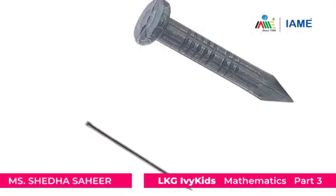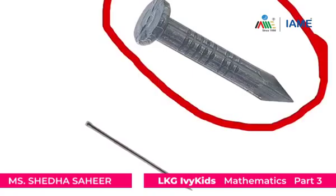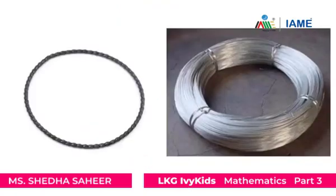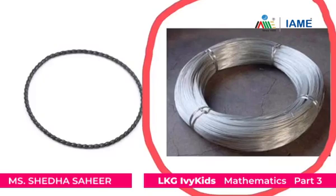Now let's see some more examples to find out thick and thin objects. Can you see two iron nails here? Can you tell me which is the thick iron nail and which is the thin iron nail? The circled iron nail is the thick one and the other one is the thin iron nail. You can see two wires here. The circled wire is a thick one and the other one is a thin wire.